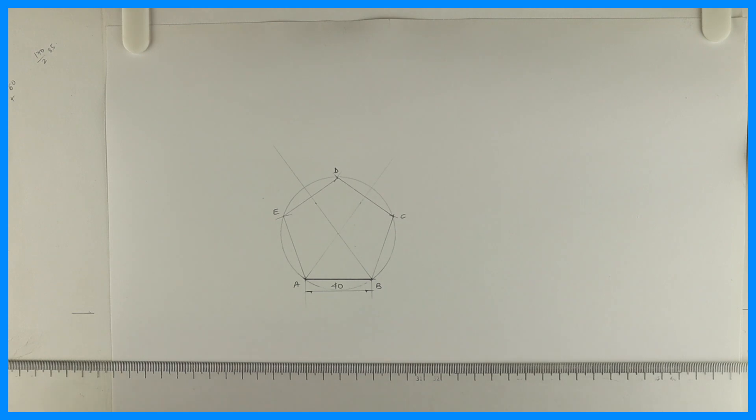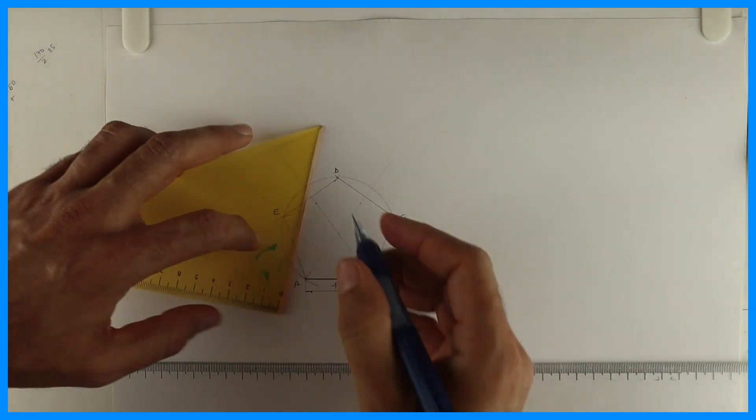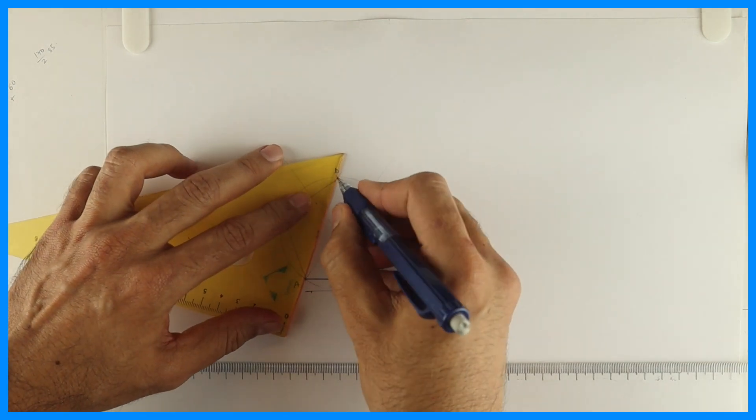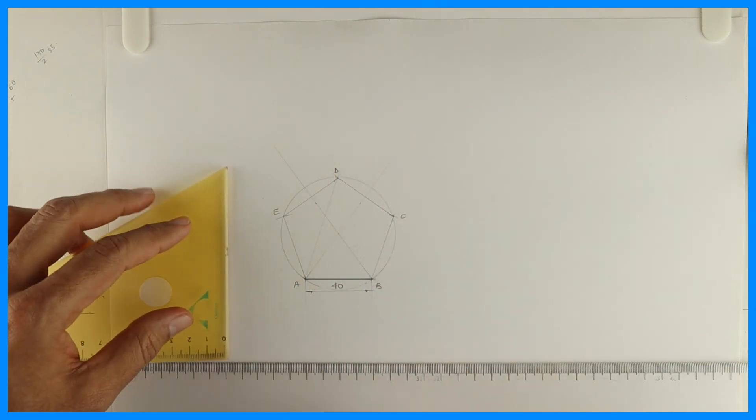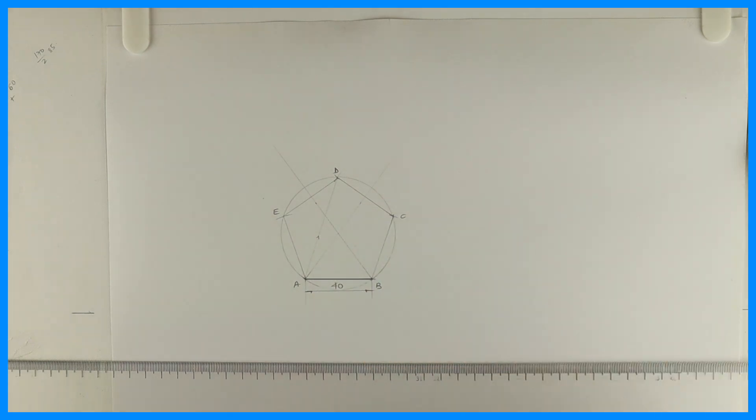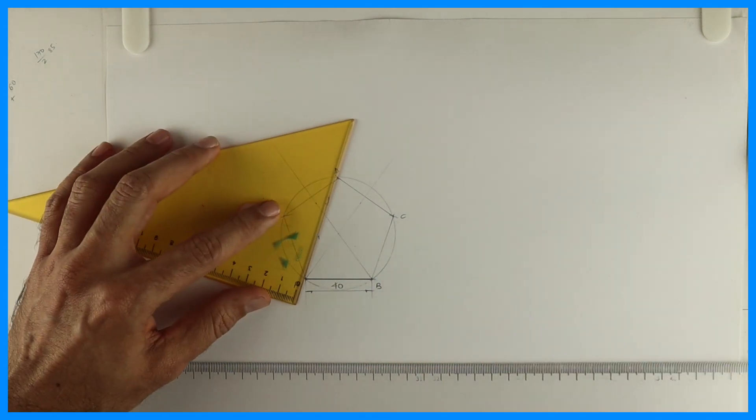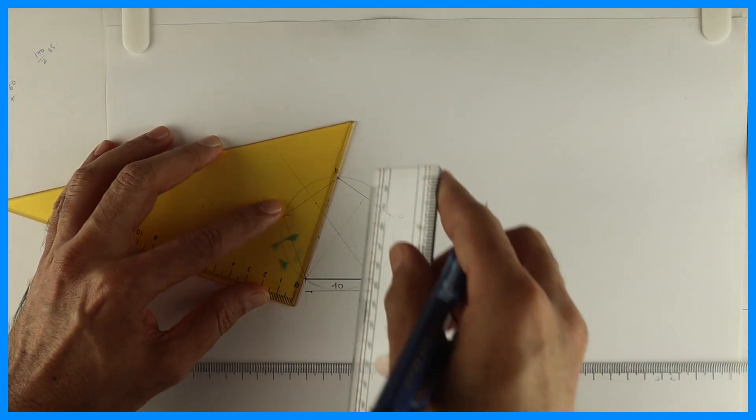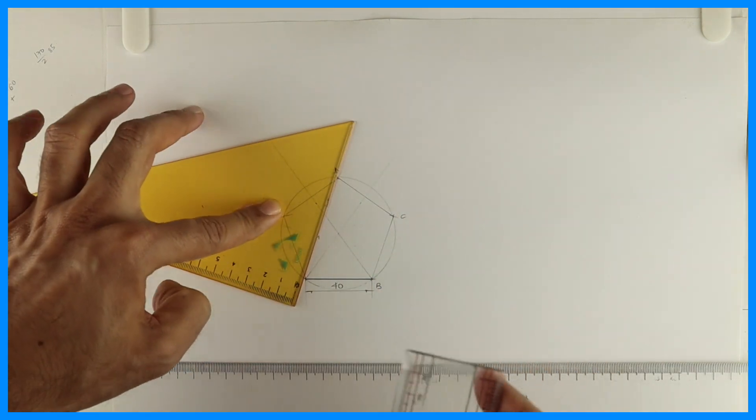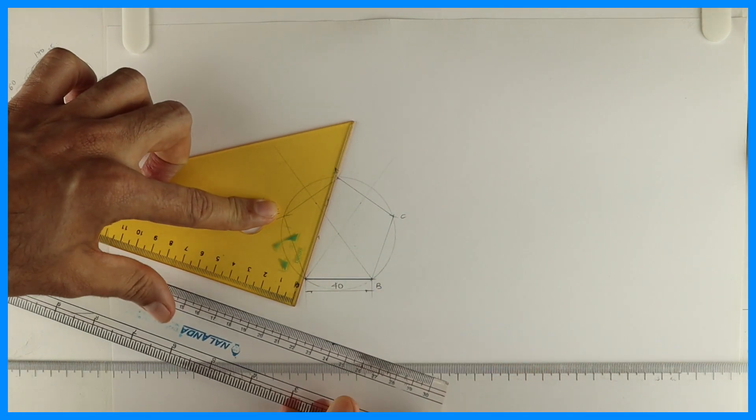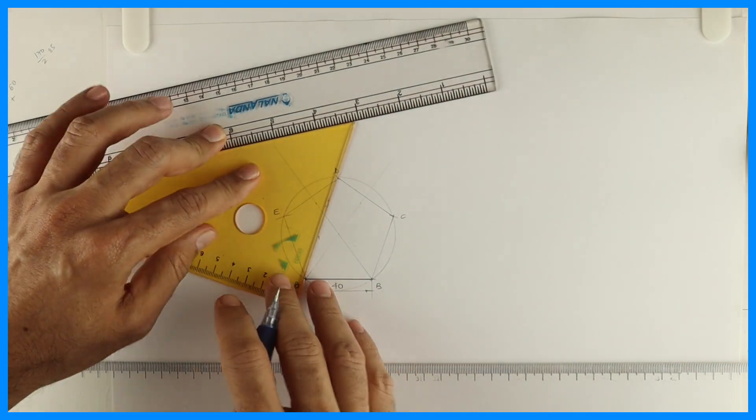Now we need to convert this pentagon into triangle. So what we will do, we will join AD. Now I'll draw parallel to AD, see this. I can keep it over here, no I'll keep it over here, see this, this would be easier.